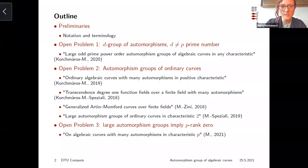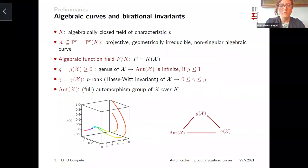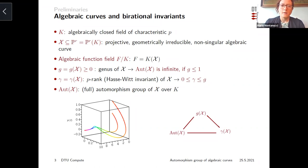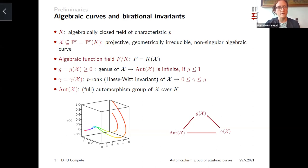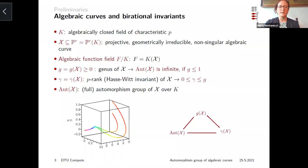Before talking about these three problems, let me fix some notation. With k, I'm going to denote an algebraically closed field of characteristic p positive. With X, I'm denoting a projective geometrically irreducible non-singular algebraic curve defined over k. I would like to emphasize that the non-singularity condition is not restrictive for the purposes of studying automorphism groups, because every curve has a non-singular model. This property allows us to jump from the purely geometrical language of an algebraic curve to the purely algebraic one given by the corresponding algebraic function field k(X).